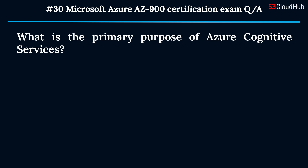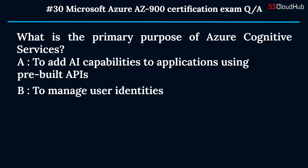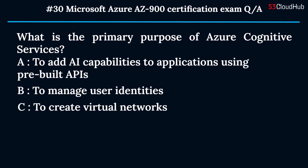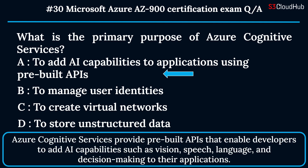The thirtieth question: what is the primary purpose of Azure Cognitive Services? Option A: to add AI capabilities to applications using pre-built APIs. Option B: to manage user identities. Option C: to create virtual networks. Option D: to store unstructured data. The correct answer is option A. Azure Cognitive Services provide pre-built APIs that enable developers to add AI capabilities such as vision, speech, language, and decision-making to their applications.